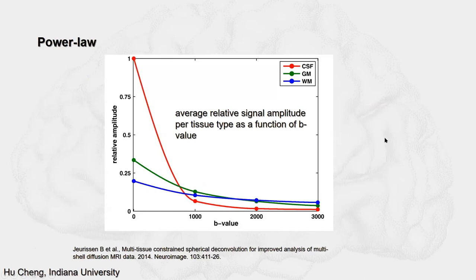Next, I will introduce a new method we developed recently. It is very simple but robust. It is based on the observation of distinct responses to b-values for different tissues. As illustrated in a figure from a paper by Jerison, you can see that CSF, gray matter, and white matter have distinct responses to the diffusion gradient at different b-values.